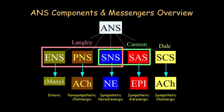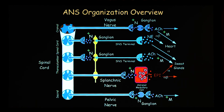This is an overview of the components and messengers of the autonomic nervous system, and an overview of its organization. Hopefully, when you think back to that initial diagram where I wrote 'uh-oh,' now maybe you can get a little sense of what we're dealing with. There are five different organizational components.